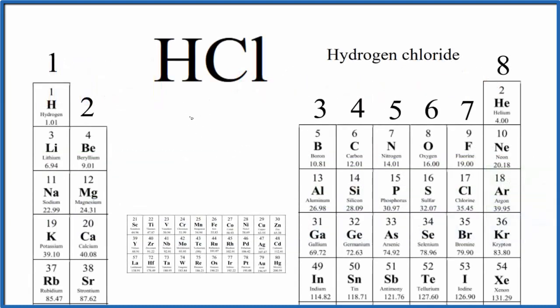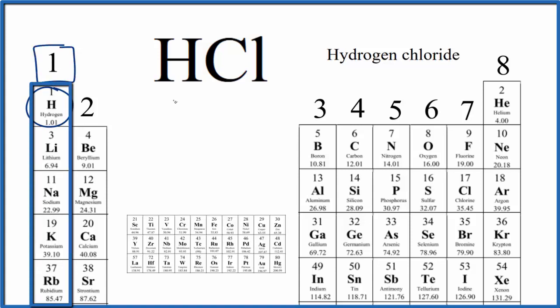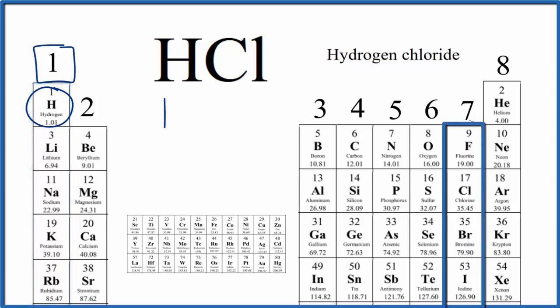First, we need to count the number of valence electrons for HCl. Hydrogen, that's in group 1. So group 1, all of these elements here, they have 1 valence electron. Chlorine, that's in group 17, sometimes called 7A. These elements here, with chlorine in this group, they have 7 valence electrons. So we add 7, 1 plus 7, that equals 8.